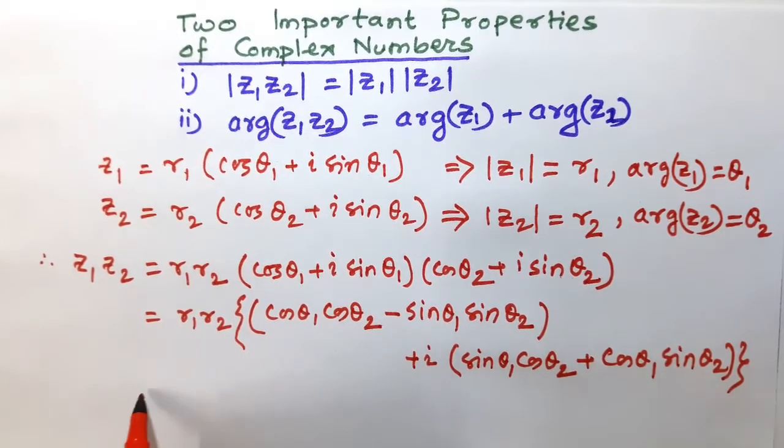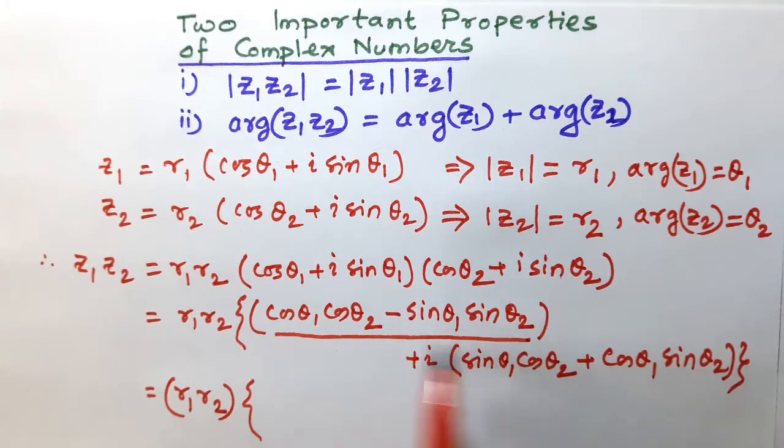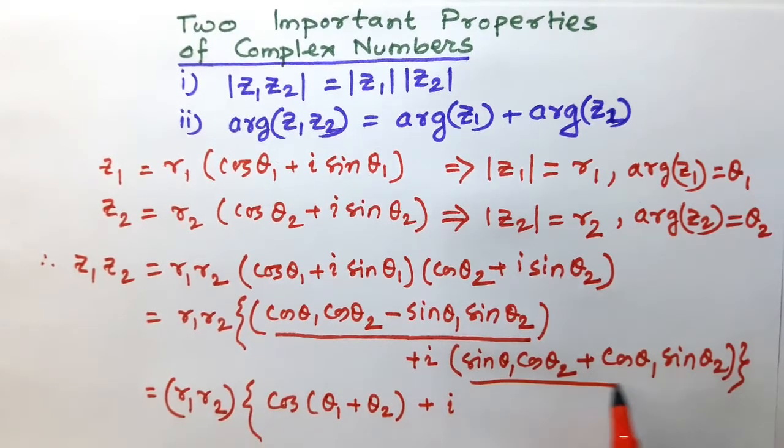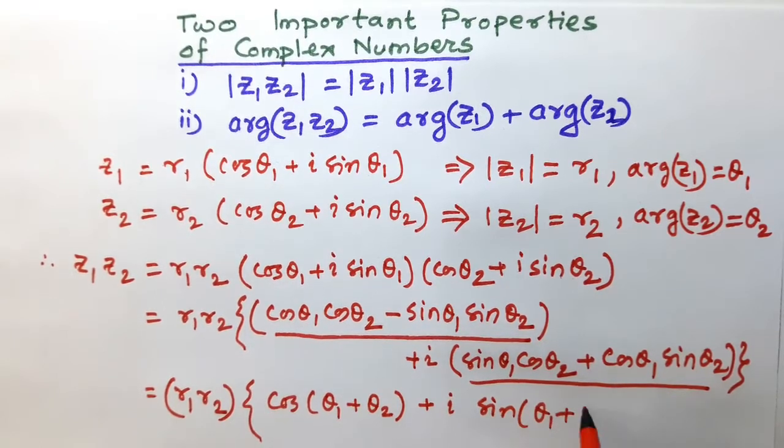Such that from this statement we have R1 R2 into, what is this one? Cos θ1 into cos θ2 minus sin θ1 into sin θ2. This is equal to cos of θ1 plus θ2, simple trigonometry, plus i, this one is sin θ1 plus θ2.